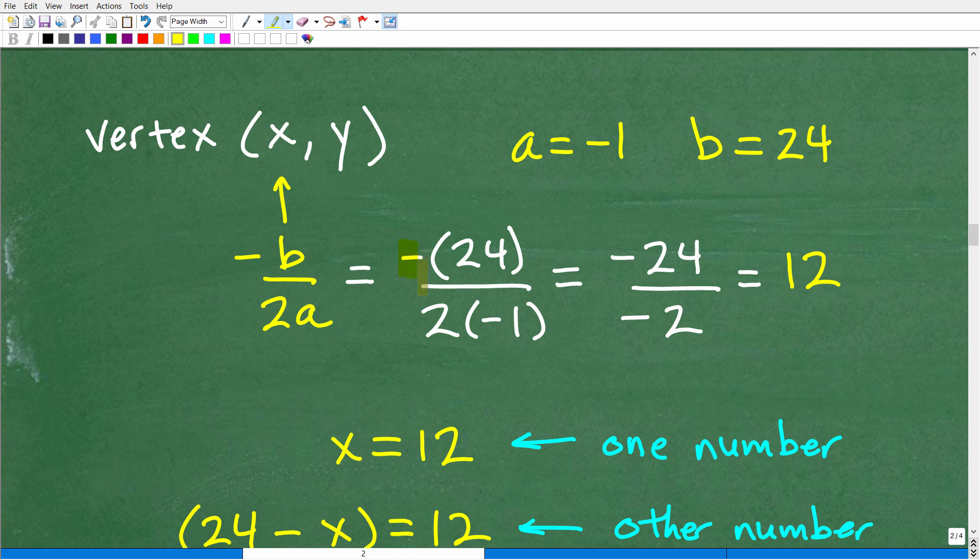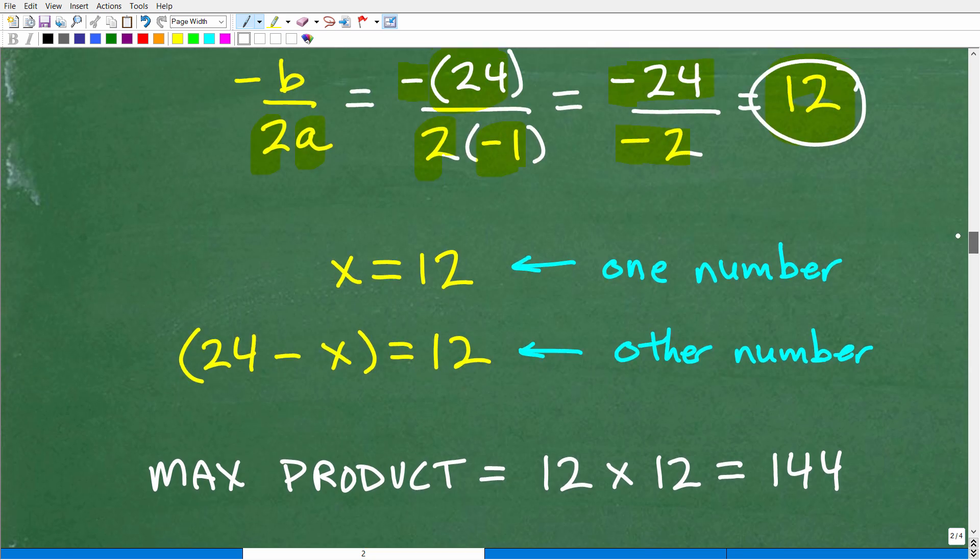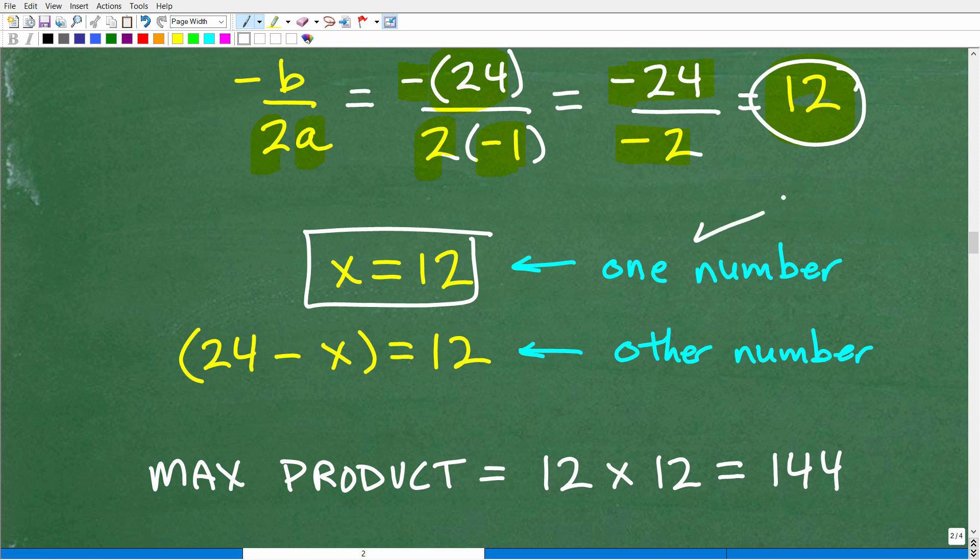What is a? The coefficient in front of the X squared, which would be negative 1. So a is negative 1 and b is 24. We just have to plug in these pieces of information and do the math. Minus b over 2a is going to be minus 24 over 2 times negative 1. This is negative 24 over negative 2. A negative divided by a negative is positive. That is 12. So X is 12. That is one of the numbers. If 12 is one of the numbers and both add up to 24, 24 minus 12 is also 12. So the maximum product is 12 times 12, which is 144.